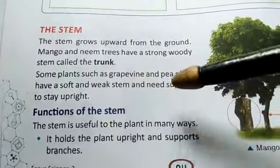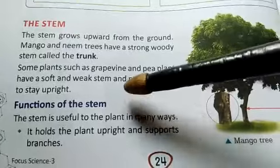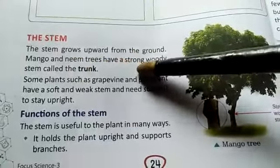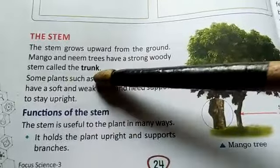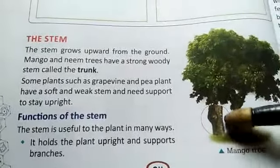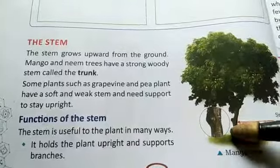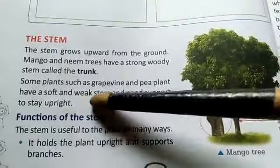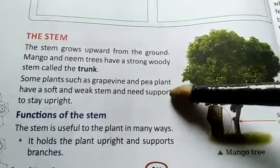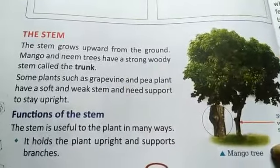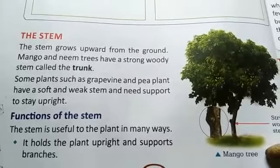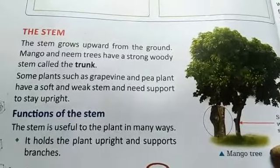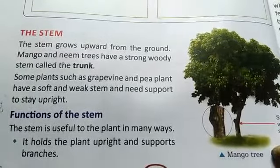The second part is the stem. The stem is found above the ground and contains fruits, flowers, branches, leaves, and the trunk. Mango and neem trees have a strong woody stem called the trunk. Some plants like grapevines and pea plants do not have a trunk — they are very weak and need support to stand upright.